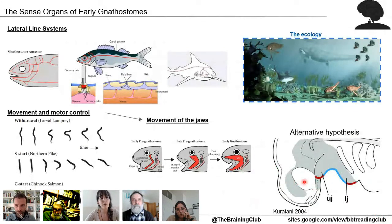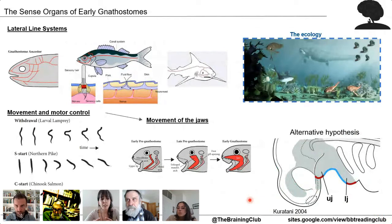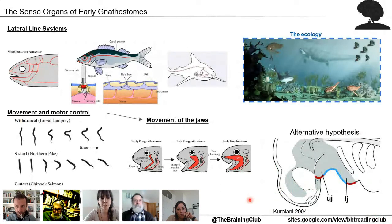About the origin of jaw movements: there are two hypotheses. One, based mainly in comparative morphology, proposes that the upper and lower elements of the first gill arch tilted forward and eventually extended to the front of the head, so most components would have homologs in jawless vertebrates. An alternative hypothesis says that the rostral boundary of a gene called Fgf8 is shifted rostrally in gnathostomes, causing a shift in Bmp genes, ultimately leading to novel tissue interactions that produce a novel upper jaw element.